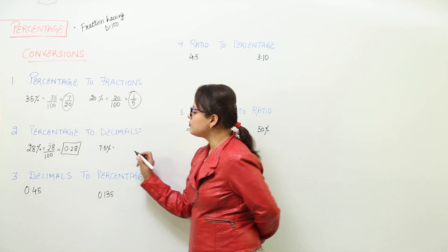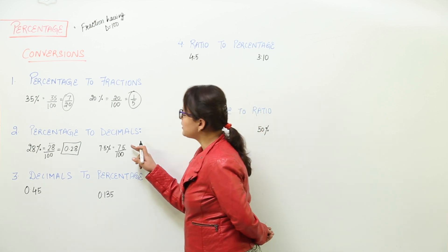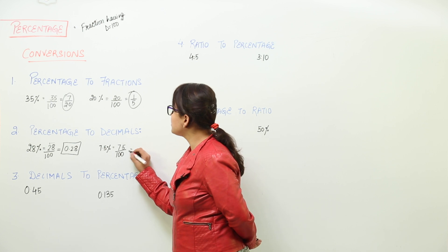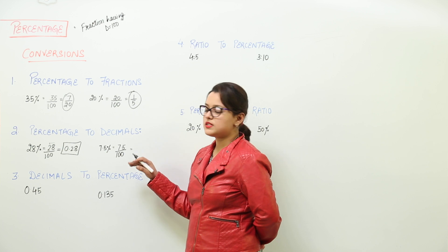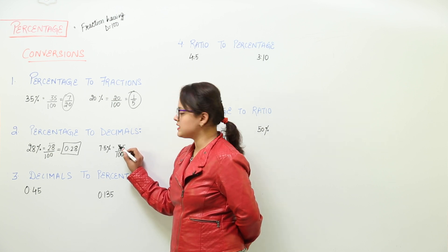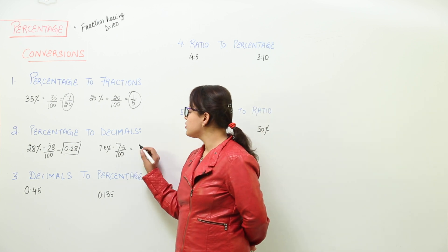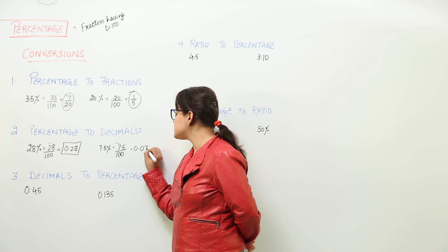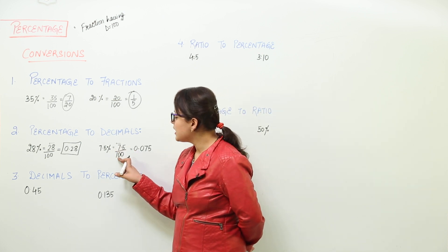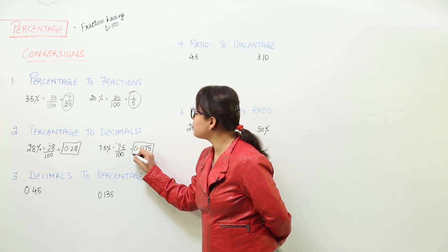Similarly for the next one, we get rid of the percentage sign and write 7.5 over 100. This is a decimal fraction because it has a denominator in the powers of 10. We count the number of zeros and start counting from the rightmost part of the numerator. But here the numerator is a decimal itself, so we start counting from the decimal place — the digit before the decimal place, that is 7. We take two decimal places because there are two zeros, giving us 0.075. So 0.075 is the decimal for 7.5 percent.